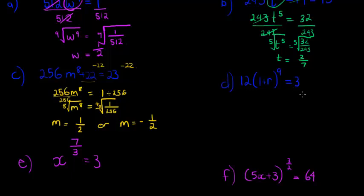How about this one? This time I see that my power that I'm trying to solve is actually a whole bracket base. But still that's what I'm going to try and get on its own. The only thing I need to do is divide by 12. So on both sides I'm dividing by 12, and I get (1+r)^9 is equal to 3 over 12, or let's make it easier and say it's 1 over 4.